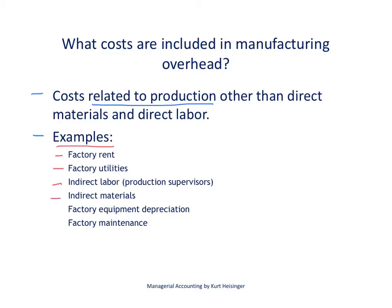Indirect materials are also an example of manufacturing overhead costs — materials that are not directly and easily associated with individual jobs. Depreciation on factory equipment and any maintenance performed within the factory are also manufacturing overhead costs. As you can see with all of these examples, manufacturing overhead costs are not easily traced to specific jobs, so we need a way to apply these costs to individual jobs — and that is where this video is headed.